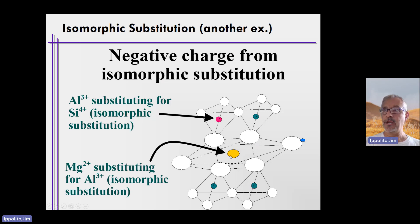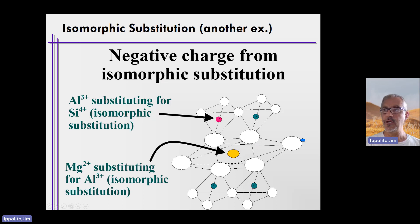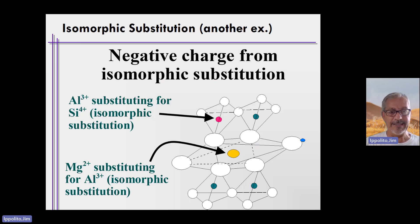In the octahedral sheet, the initial element is aluminum Al³⁺. What can substitute for aluminum must be an element of similar size and shape — that happens to be magnesium Mg²⁺ or iron Fe²⁺. These can move in and replace aluminum. The overall charge on the octahedral sheet is initially zero due to oxygen sharing, but if aluminum Al³⁺ is replaced by Mg²⁺ or Fe²⁺, you lose a positive charge — or equivalently, you gain a negative charge.